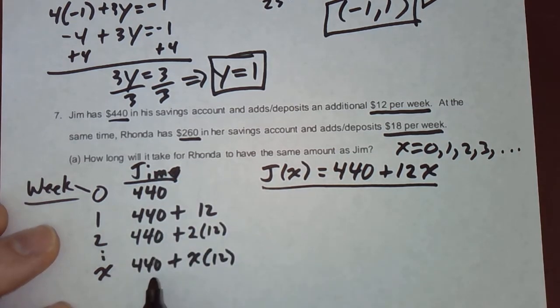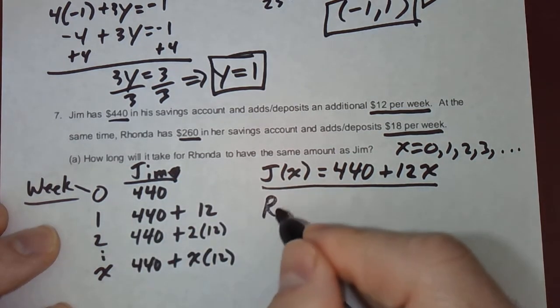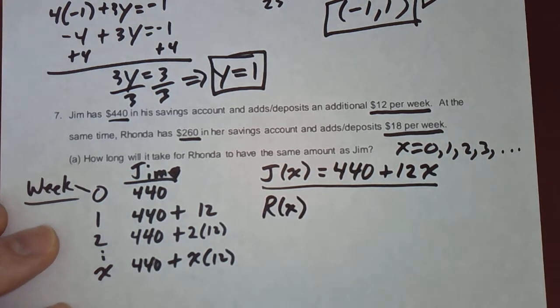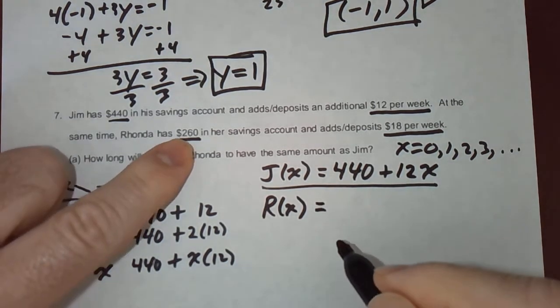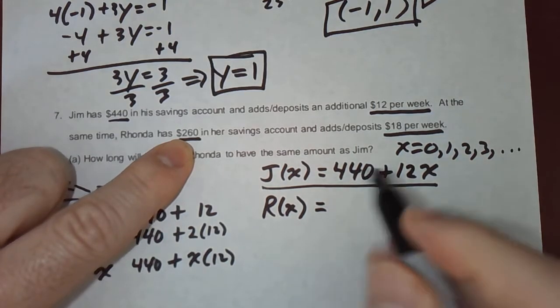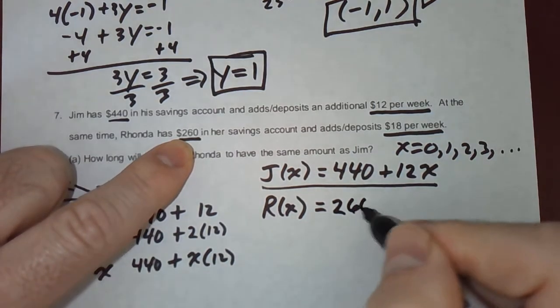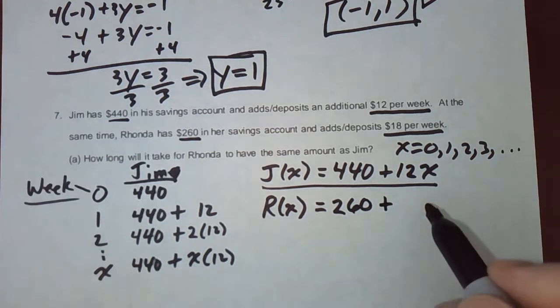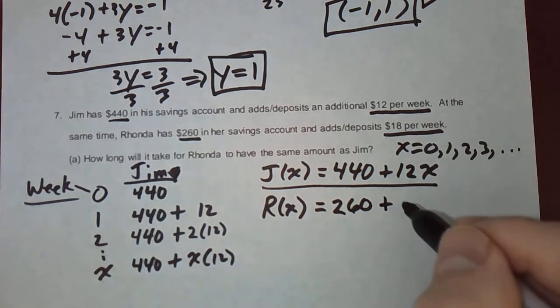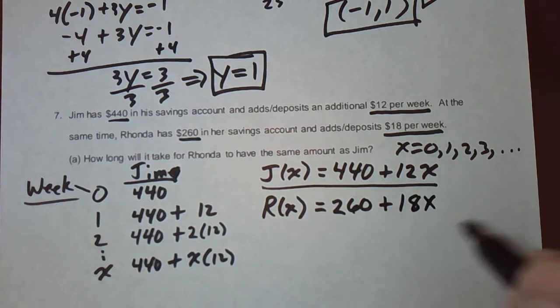Well, similarly, I think we can do Rhonda. Her function, R of X, would be equal to what? Her starting amount. This was Jim's starting amount. That's Rhonda's starting amount. Plus, how much is she adding each week? 18. So, 18X.